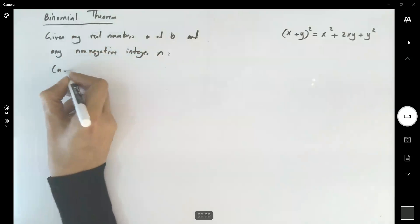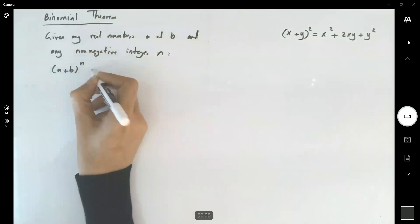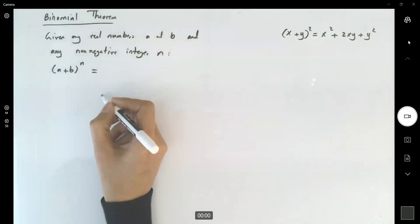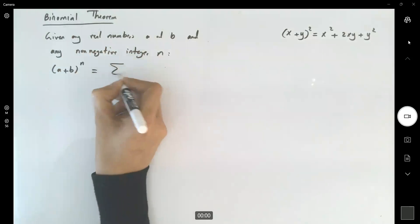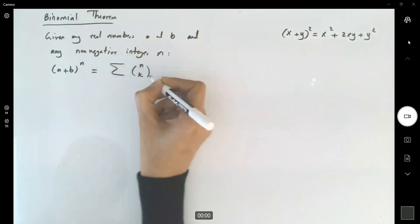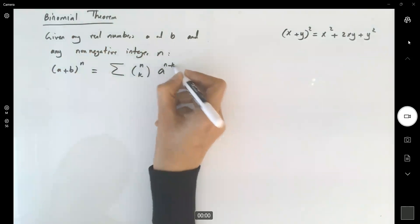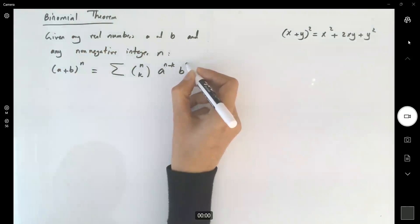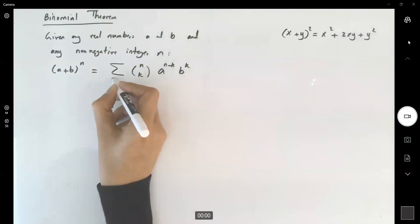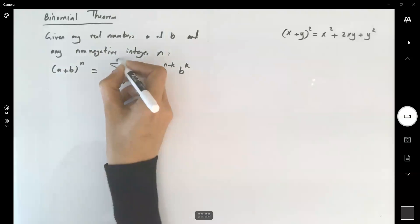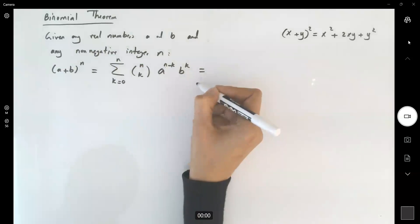A plus b to the nth power can be written as the sum of the combination of k objects out of n objects, a to the power n minus k, b to the power k, and your k starts from zero, goes to n, or in expanded form.